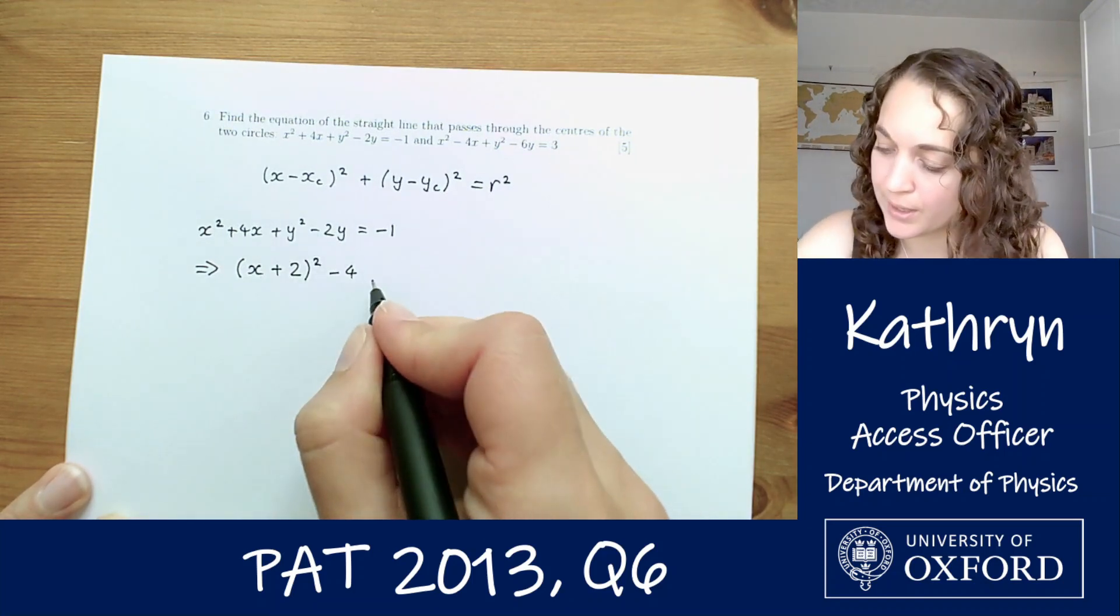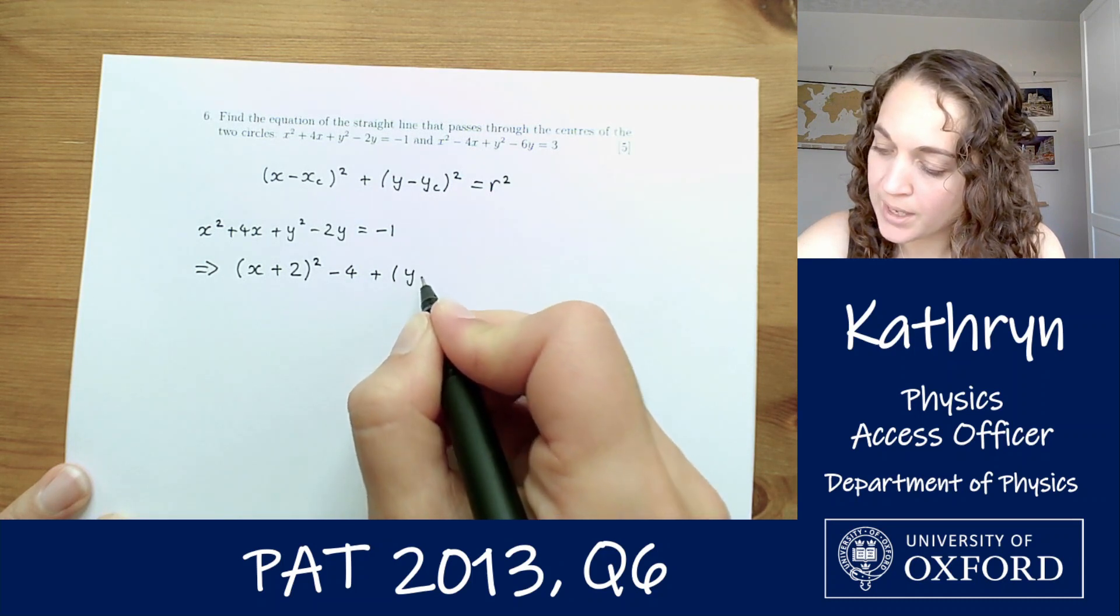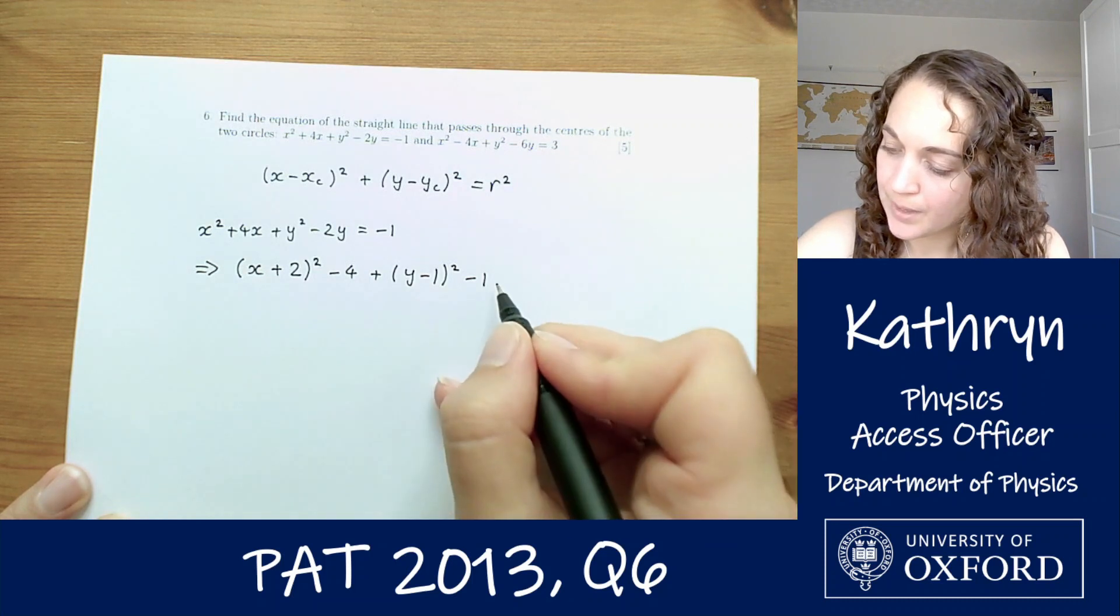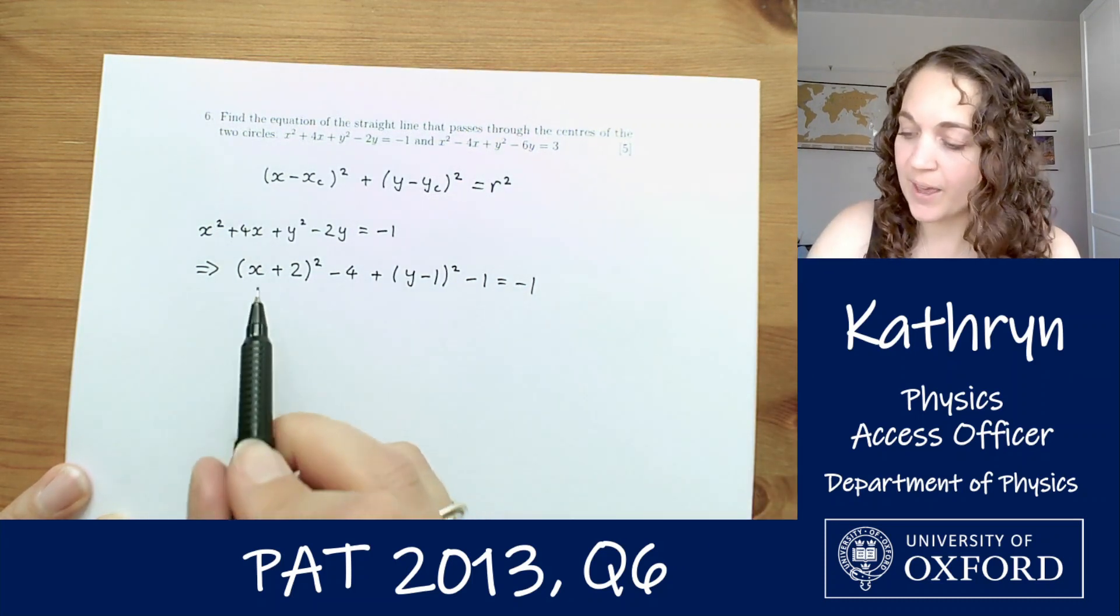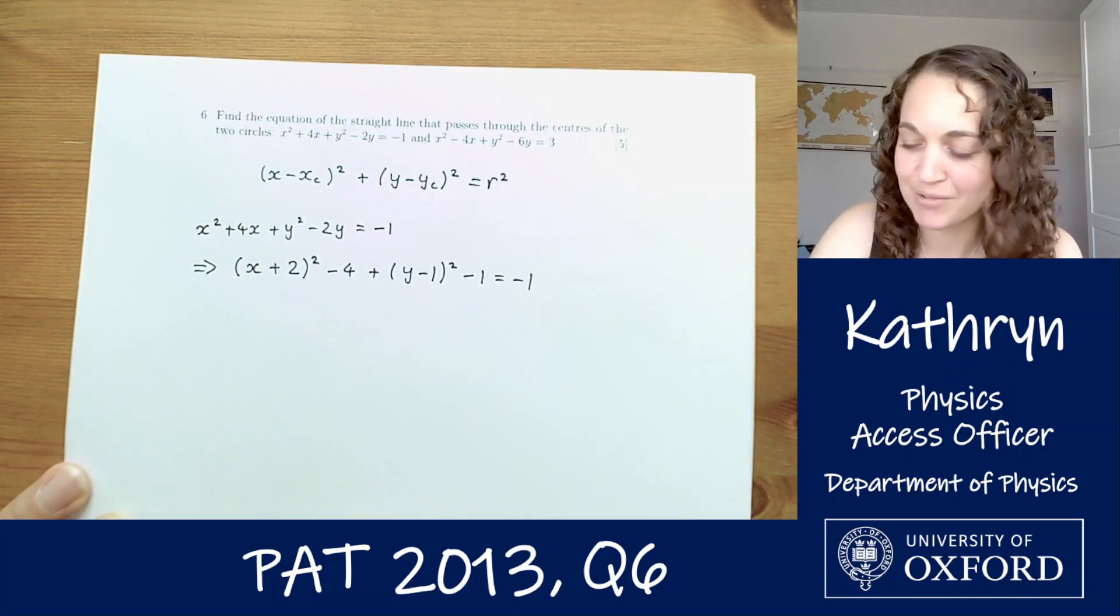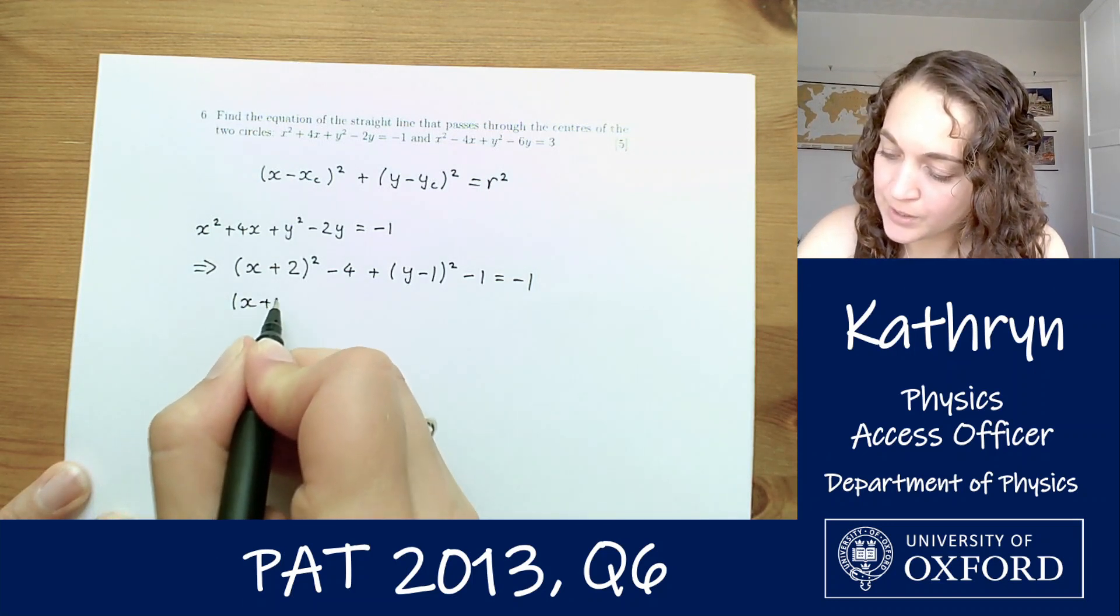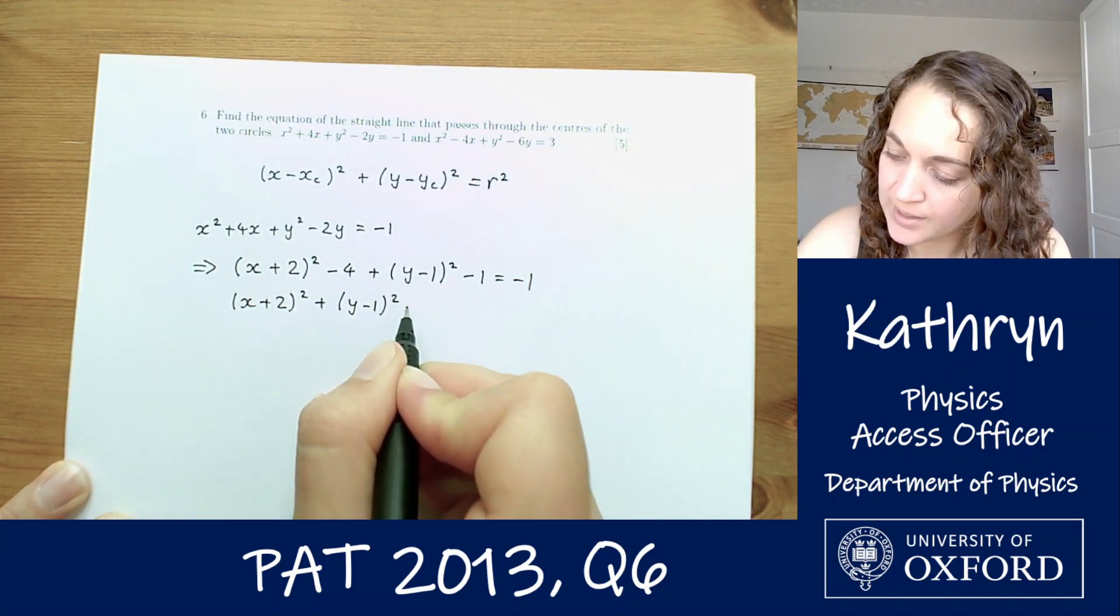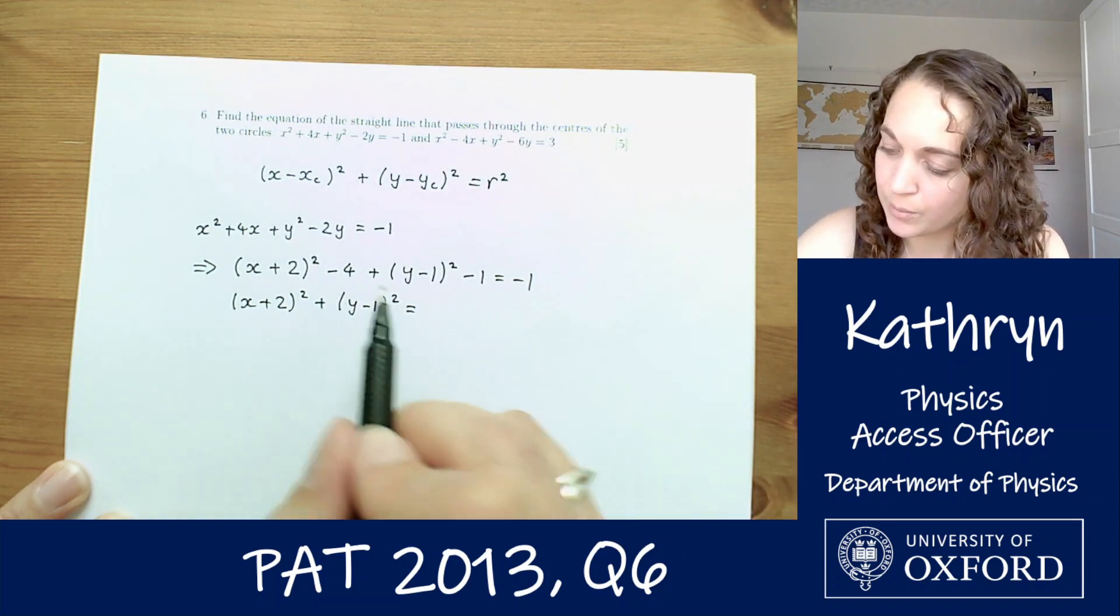Then we're going to do the same for the y part and that is going to give us plus y minus 1 squared minus 1 equals minus 1. So now we're halfway there, we've got the brackets sorted but we still need to put all of the spare numbers onto the right hand side. So we're going to have x plus 2 squared plus y minus 1 squared equals minus 1 plus 1, so that's 0, plus 4.